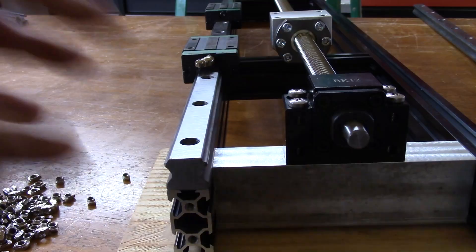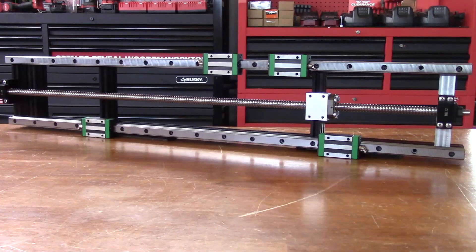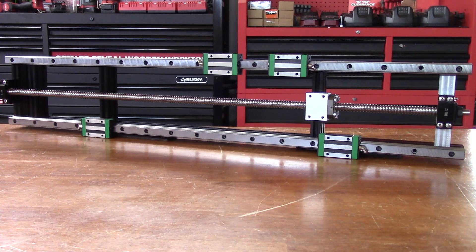Then simply place the slide into the extrusion and bolt away. Here you go, an almost complete X-axis.